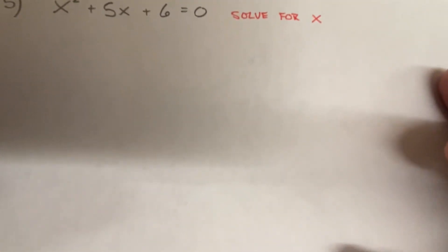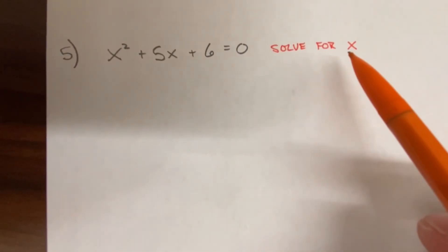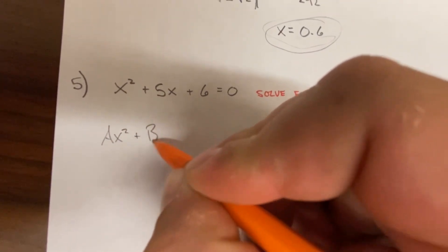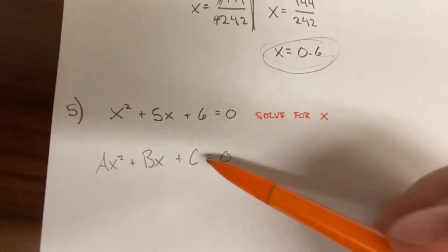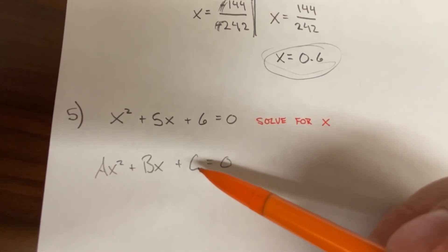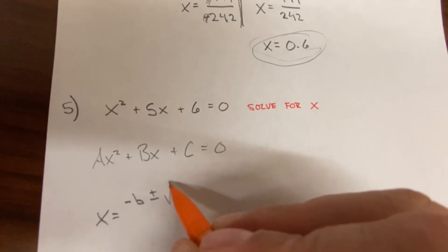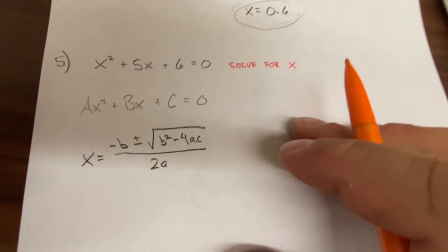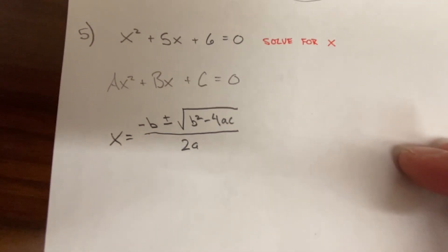Question five: we're given x squared plus 5x plus 6 equals zero and asked to solve for x. This is the standard form of a quadratic equation: ax squared plus bx plus c equals zero, where a equals 1, b equals 5, and c equals 6. We'll use the quadratic formula.